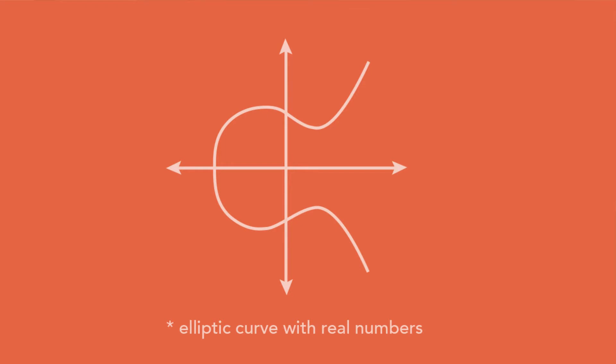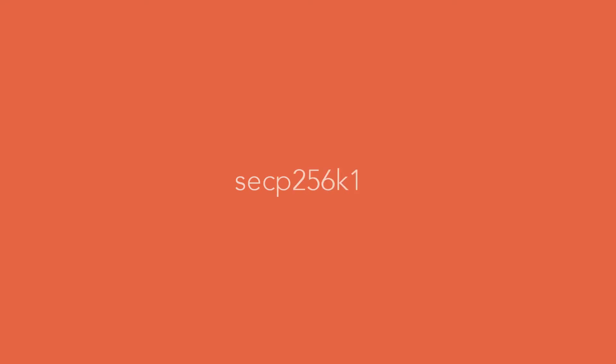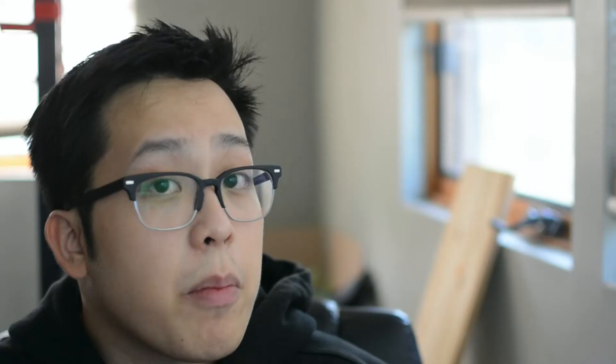This is what an elliptic curve looks like with real numbers. More specifically, bitcoin uses the secp256k1 curve, defined by this function. If we try to plot the elliptic curve over a finite field instead, we get this mess.